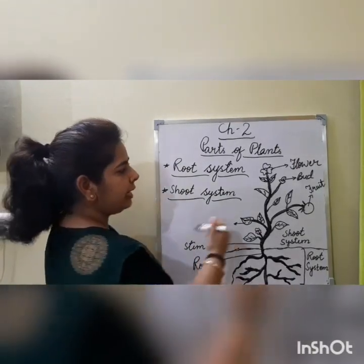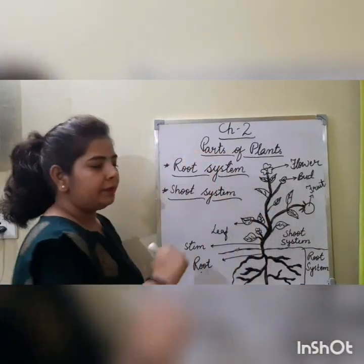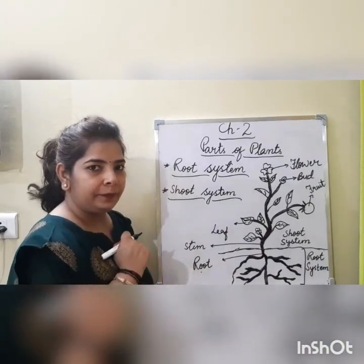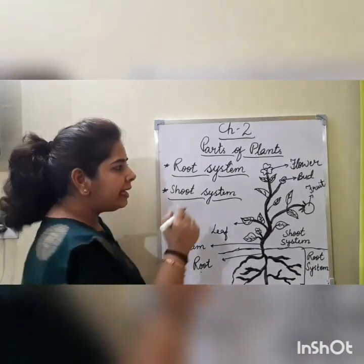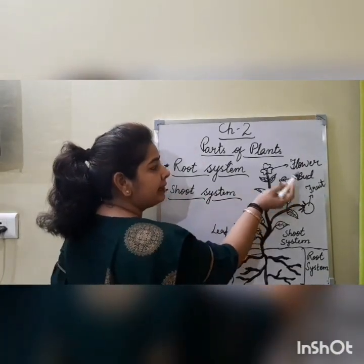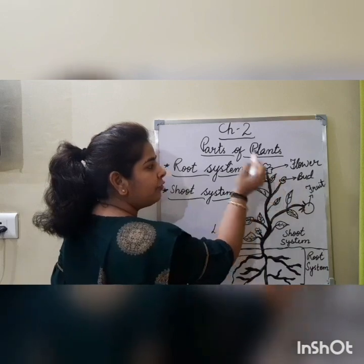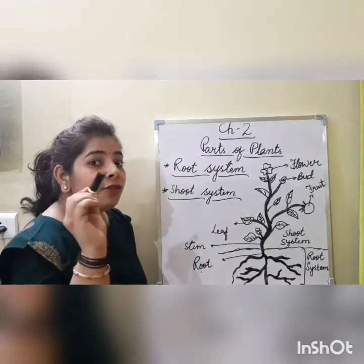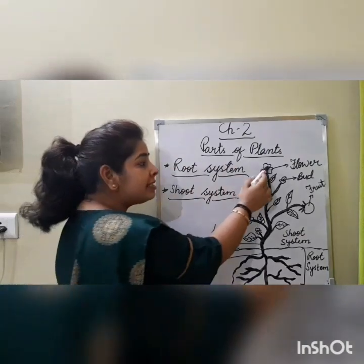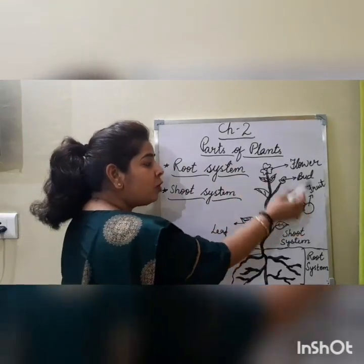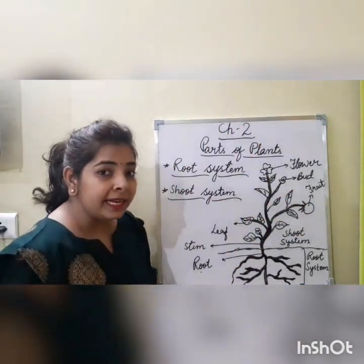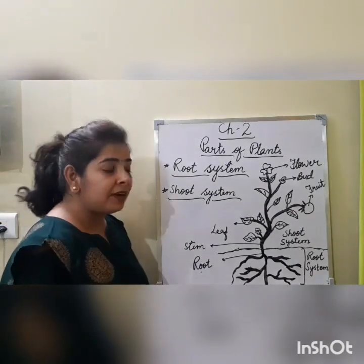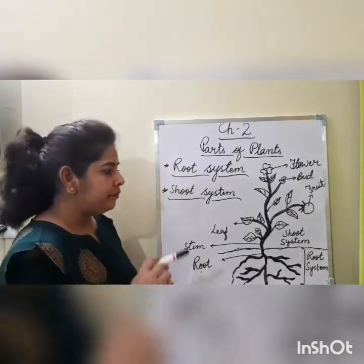Next is bud. Bud — in Hindi we call it kali. From bud, flower is formed. And from flower, fruit is formed.